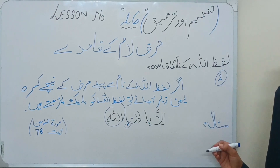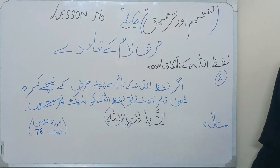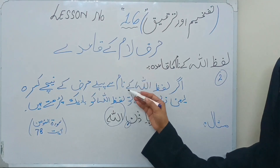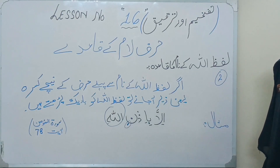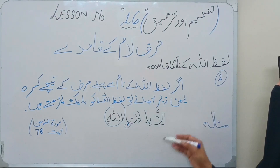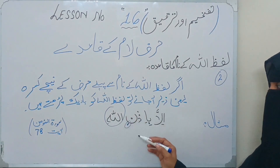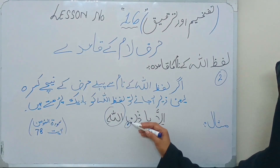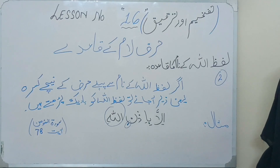آئیے اب next قائدہ دیکھ لیتے ہیں۔ جیسے آپ نے سمجھا: اگر اللہ سبحانہ وتعالیٰ کے نام سے پہلے زبر یعنی فتحہ آ جائے یا پیش یعنی ضمہ آ جائے تو ان دونوں کنڈیشنز میں پور پڑھنا ہے۔ اور second قائدے میں — اگر اللہ کے نام سے پہلے حرف کے نیچے زیر ہو تو اس کنڈیشن میں اللہ کے نام کو باریک پڑھنا ہے۔